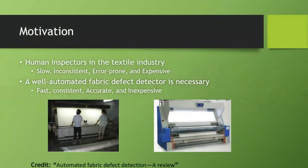We are trying to solve the fabric defect detection problem — we want to build an automated system that is able to detect fabric defects. The reason is we observe that nowadays in the textile industry, the final inspection step is still done by humans. However, human labor can be quite inconsistent due to several reasons, such as eye fatigue when you stare at something for too long, and distractions — for example, when you talk to your colleagues. Human labor is known as being slow, inconsistent, erroneous, and expensive sometimes.